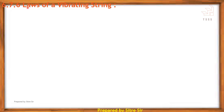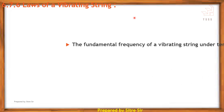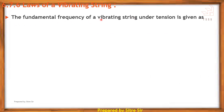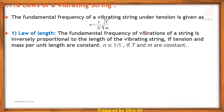The next point is the laws of vibrating string and fundamental frequencies. The equation for a string stretched between two rigid supports: the fundamental frequency of a vibrating string under tension is given by n = (1/2l) × √(T/m), where T is tension and m is mass per unit length.